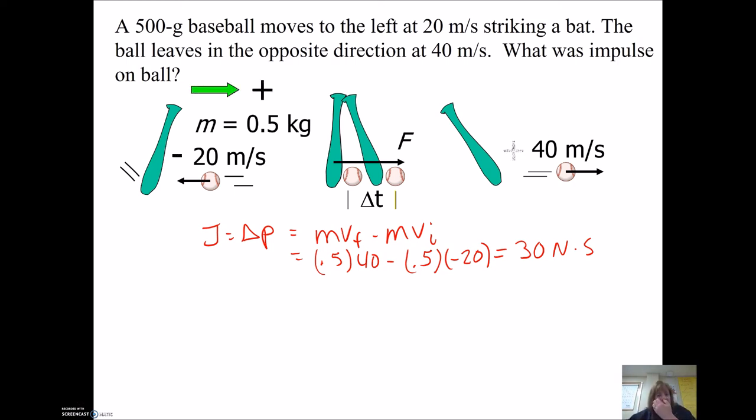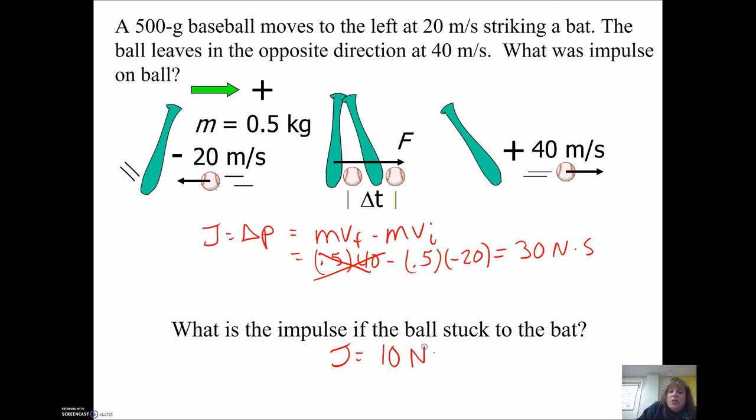Now, what if the ball stuck to the bat? I know, crazy, how would a baseball ever stick to a bat? But what if it did? What would the impulse be then? Well, then we'd have no final momentum. So it'd all be the initial momentum. So now our impulse is only 10 newton seconds, 0.5 times 20. A lot less. So bouncy is better. So if you need to make something close, throw something at it that's going to bounce, not something that's going to stick. Psychologically, your brain wants to say sticking is better. But from a force standpoint, you want to bounce.